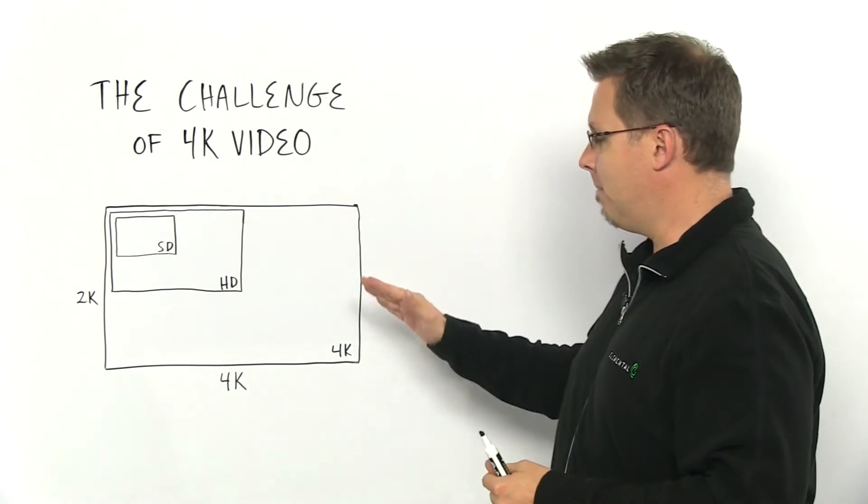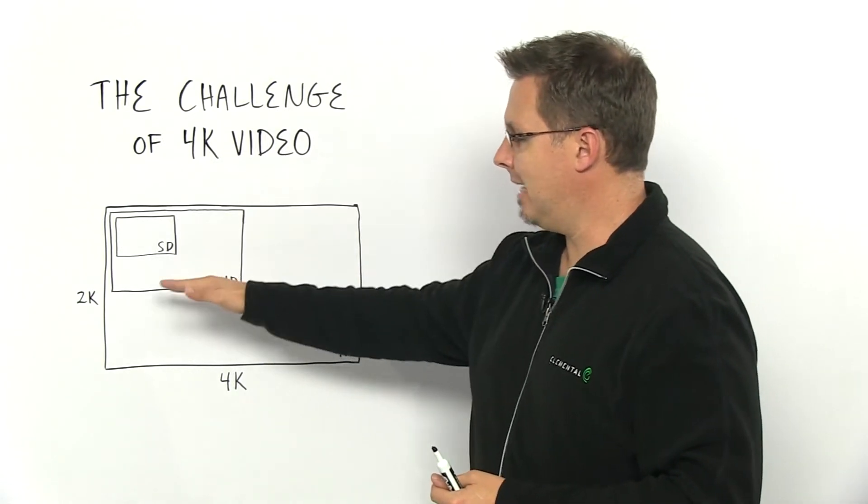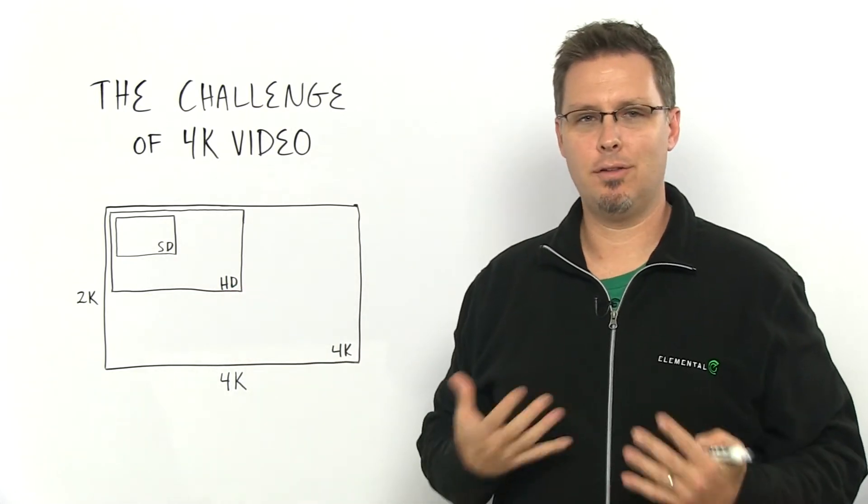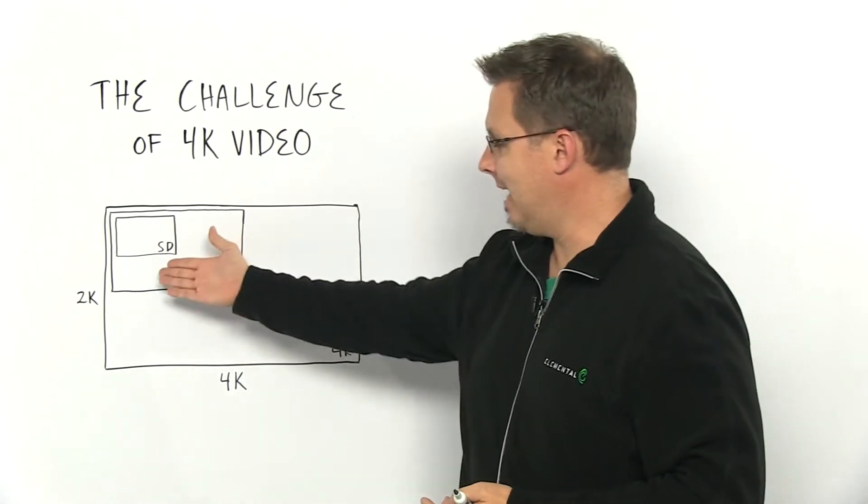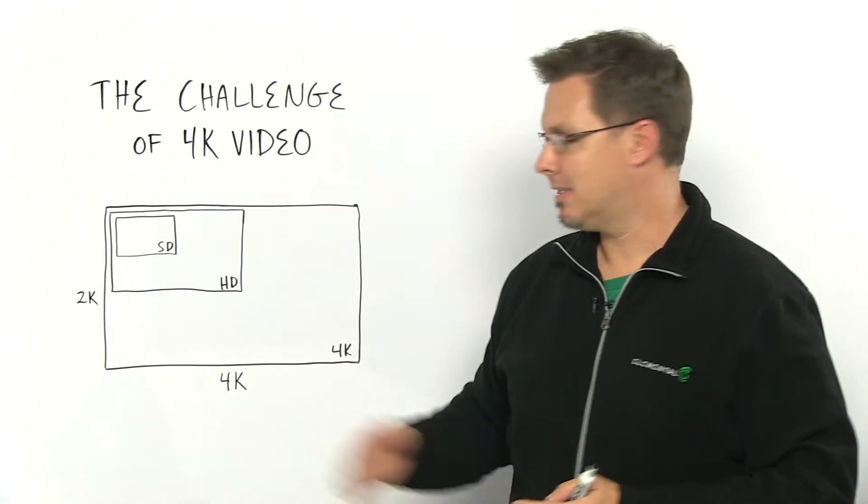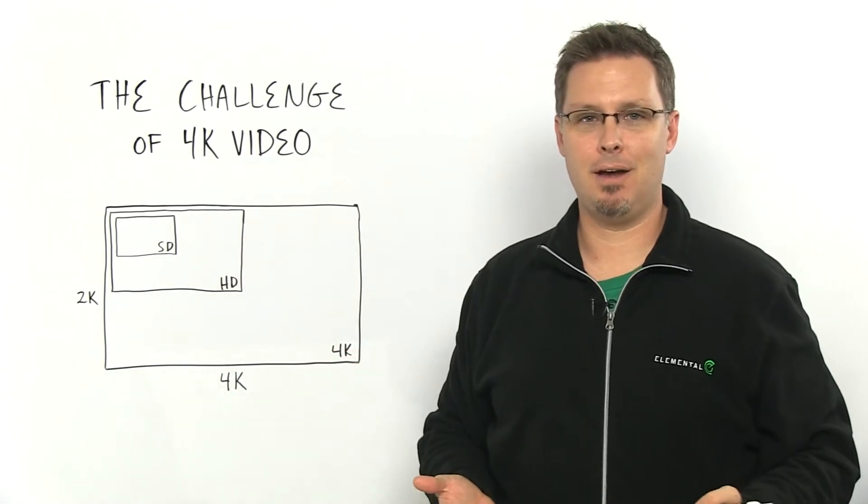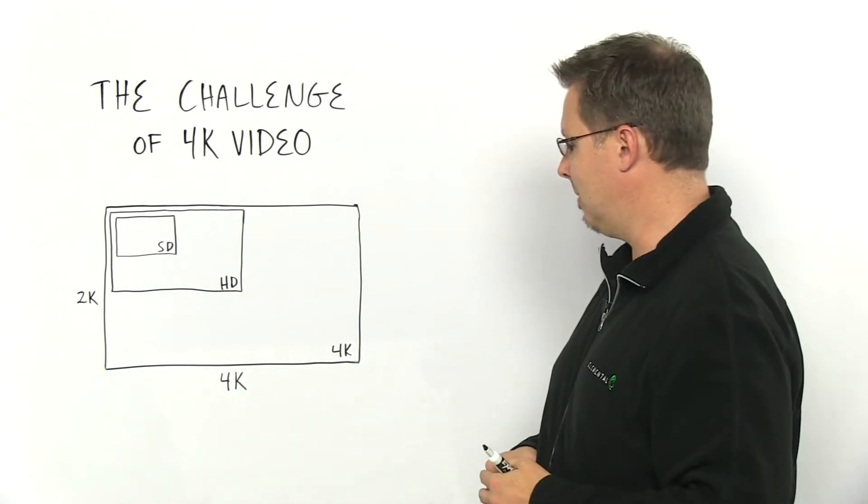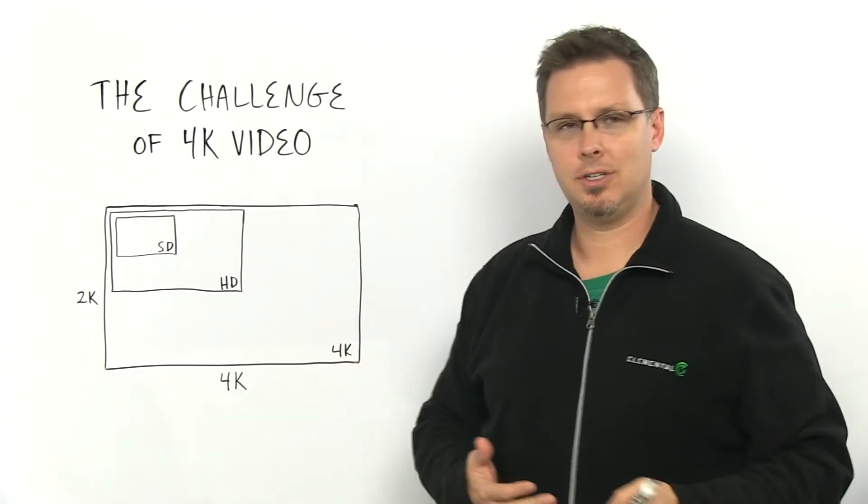That's one of the main challenges. How do you deal with all of these pixels? When you look at SD versus HD versus 4K, there's essentially 16 times the amount of pixels on a given screen, on a given image. And that's really challenging.